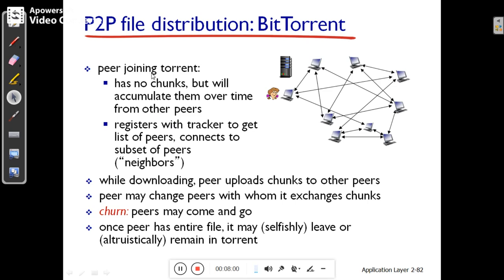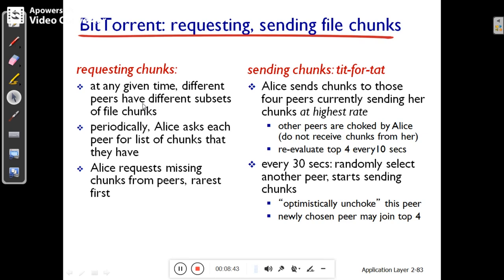A peer joining the torrent has no chunks initially but accumulates them over time from other peers. The peer registers with the tracker to get the list of peers and connects to them — those peers are called neighbors. While downloading, the peer also uploads chunks to other peers. Peers may come and go, which is called churn. At any given time, different peers have different subsets of file chunks. Alice asks each peer for the list of chunks they have and uses a technique called rarest first to decide which chunks to download.